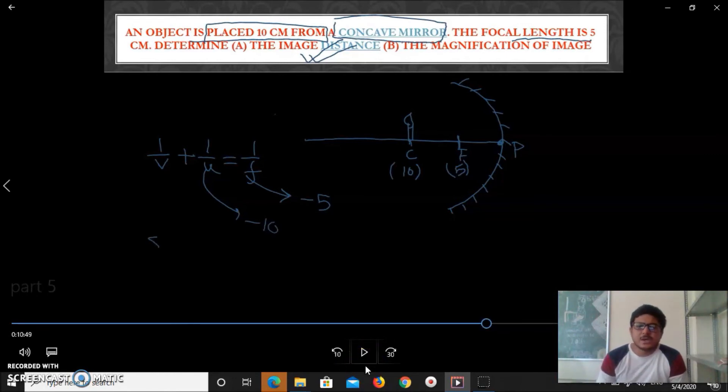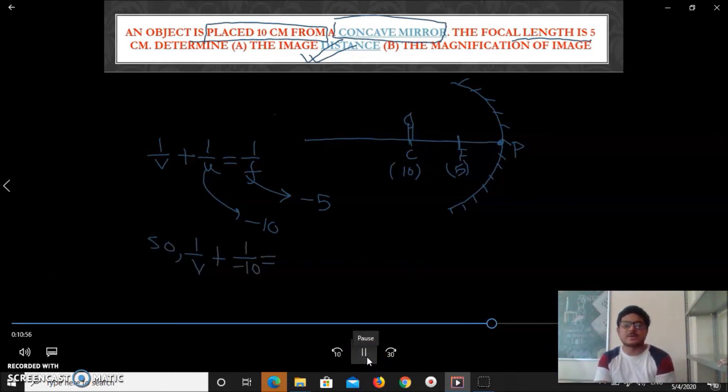The reason is we just now discussed sign convention where it is explained everything should be measured from pole, and if some distance is in the left side of pole, that distance will be negative. Here focus left side, u left side. That is the reason here u is -10, f is -5. So now let's calculate v. It will be now -1/10 = -1/5. So v equals, simply our calculation we will complete it.